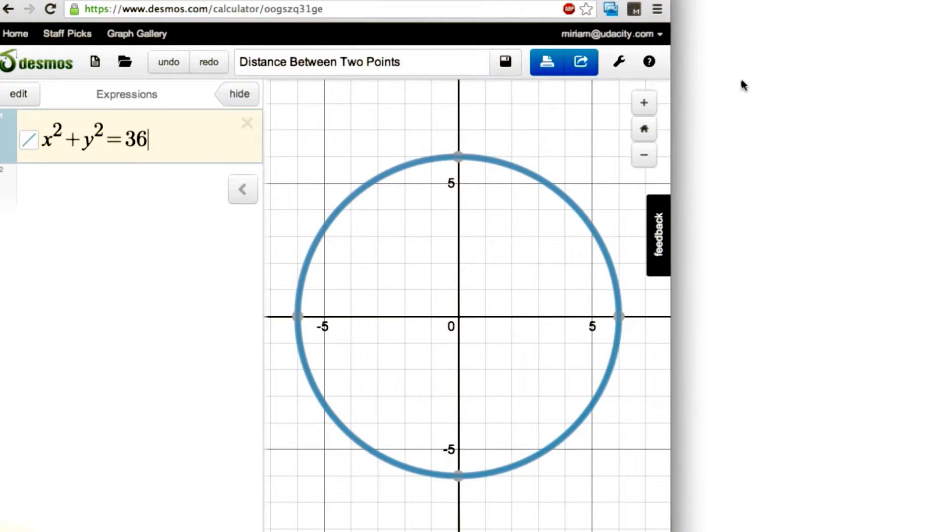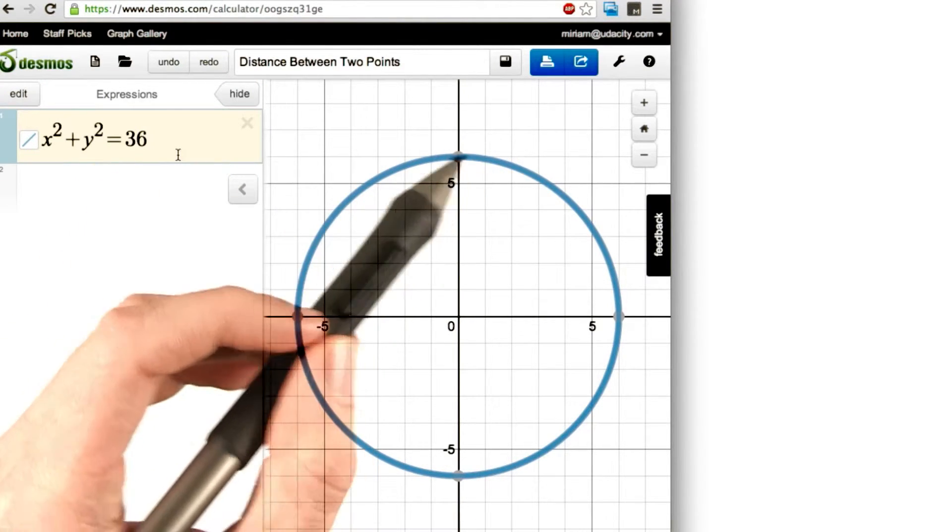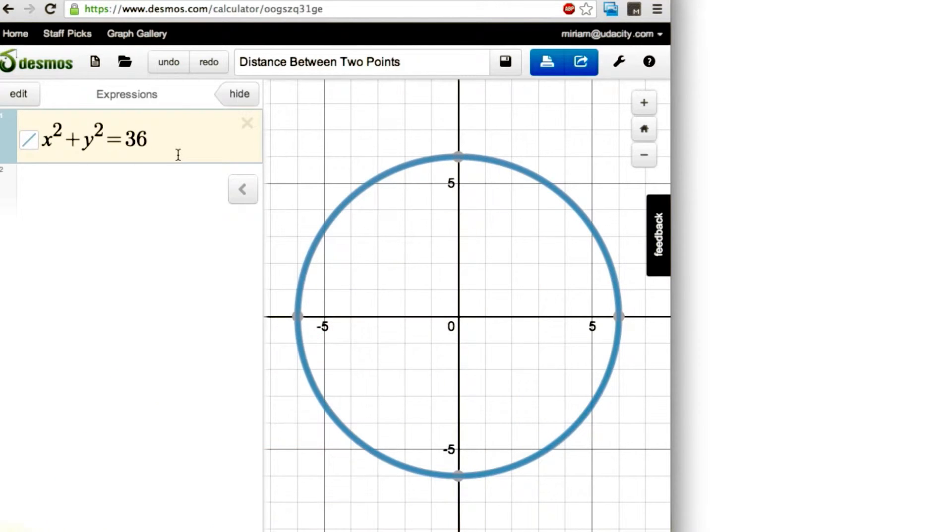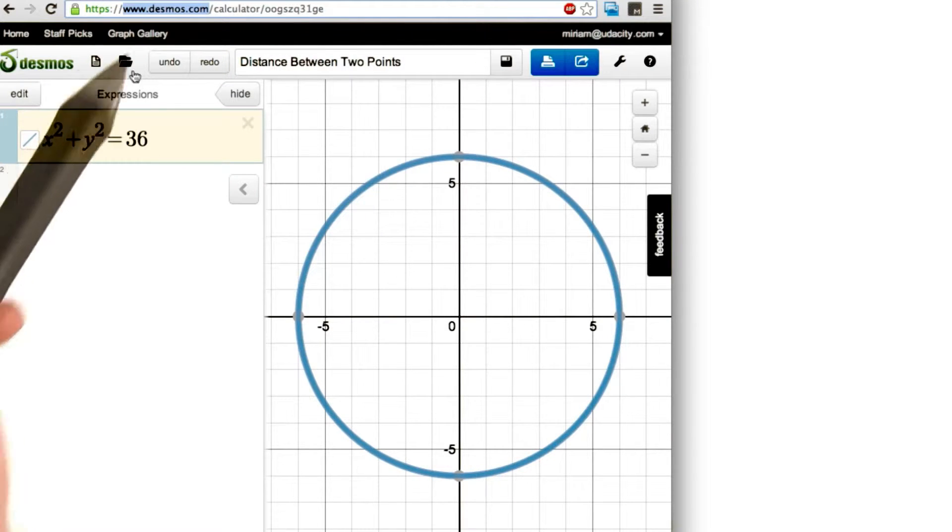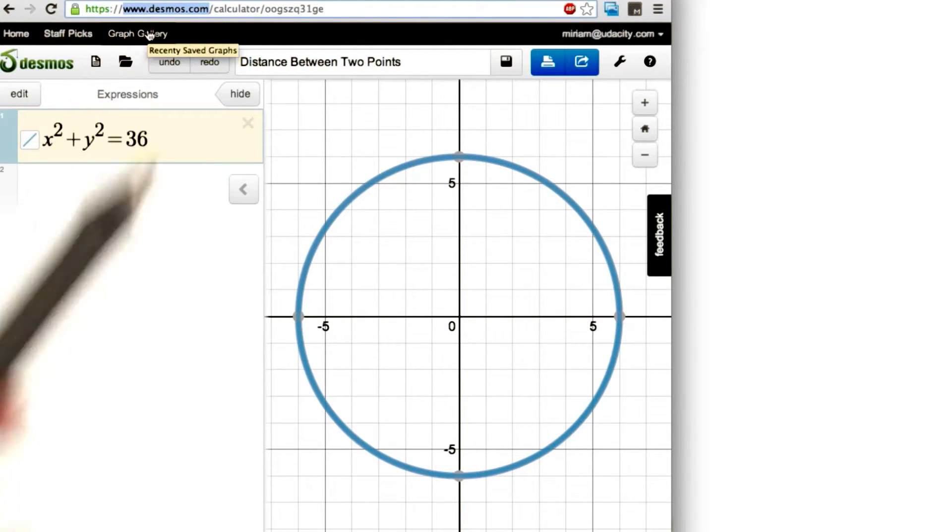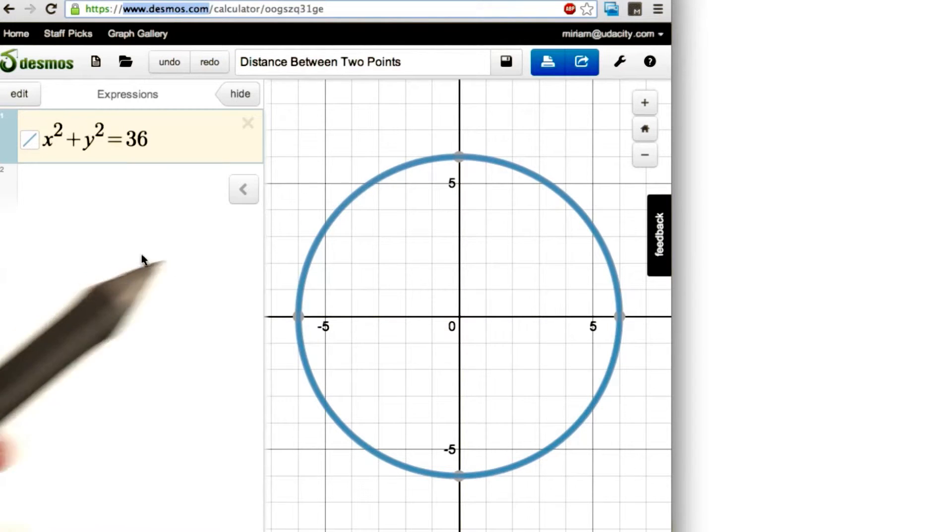There's this amazing online graphing calculator called Desmos. If you've never heard of it, I highly recommend that you check it out. It allows us to easily enter in equations and we can instantly see what the graph looks like. For now, we're going to look at the equation of a circle. But if you ever want to play around with this on your own, go to www.desmos.com. You can create your own account and then start to draw and save your own graphs.